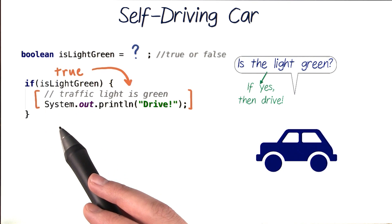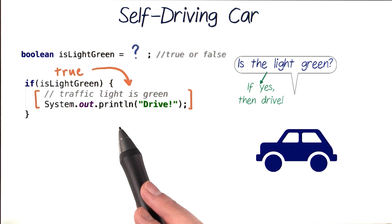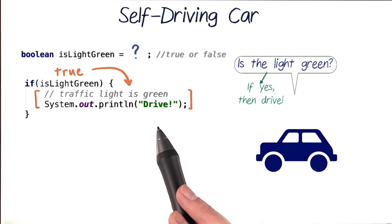If this test condition is true, we'll enter whatever code is contained inside the curly braces of our if statement and execute that code. Inside our if statement, we'll just print out the action we want our car to take, which is to drive.